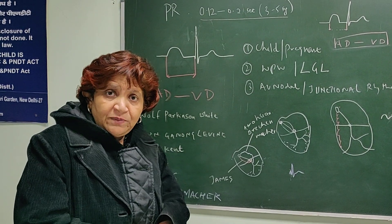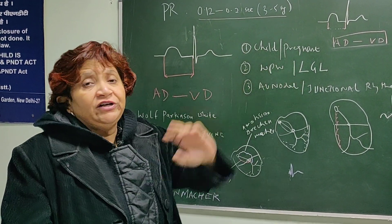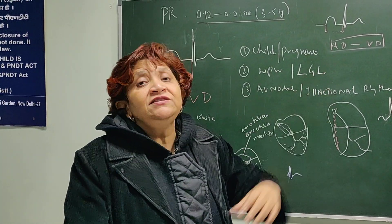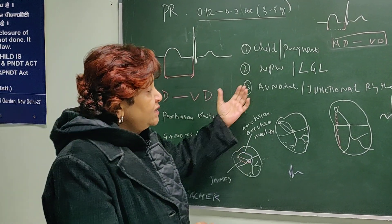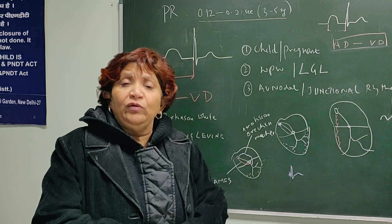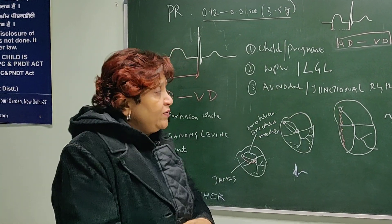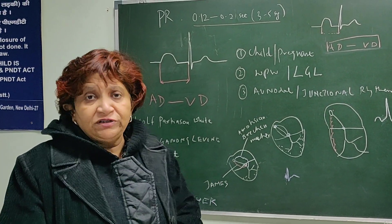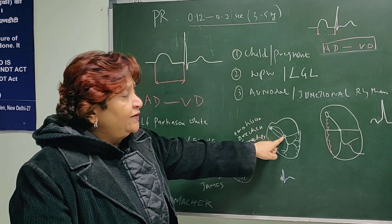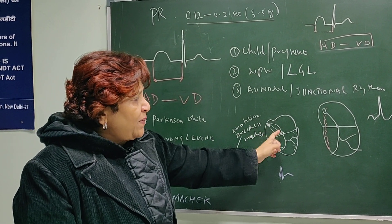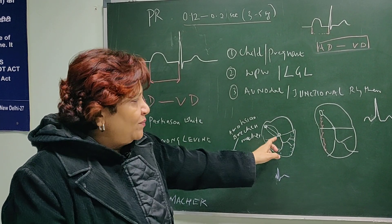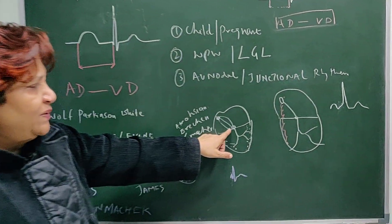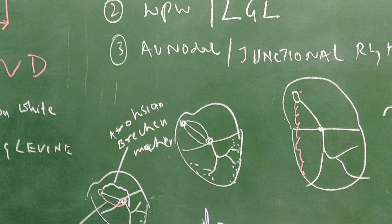What are those conditions of accessory pathway? That is WPW and LGL. WPW is Wolf-Parkinson-White syndrome and LGL is Lown-Ganong-Levine syndrome. And then the short PR interval can also be because of AV nodal rhythm or junctional rhythm. In AV nodal and junctional rhythm, the impulse is not originating from the sinus node but from somewhere below near the AV node, so it will pass very quickly from AV node into the bundle of His. The distance from SA node is reduced, so the PR interval will shorten.